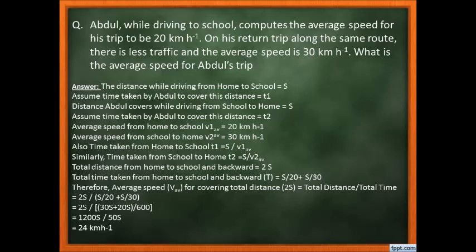Average speed = 2S divided by (S/20 + S/30). When you solve this, the answer comes out as 24 km per hour. So the average speed for Abdul's entire trip is 24 km/h. It's very easy — I hope that makes sense.